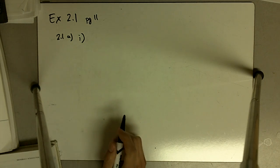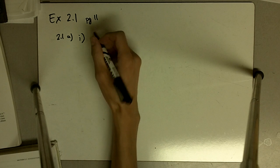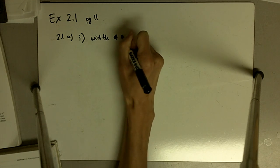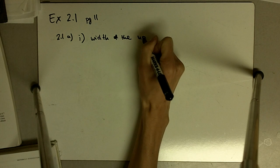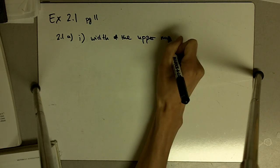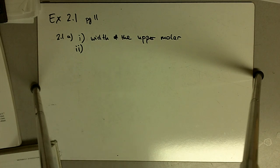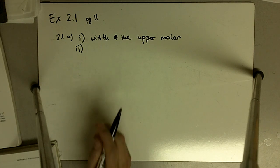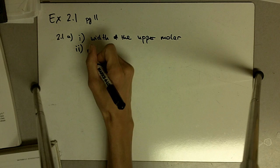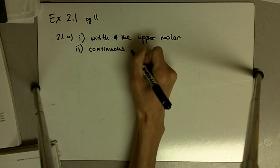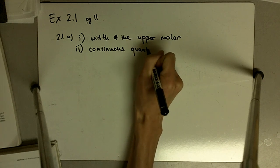So it says identify the variable. The variable in this case is the width of the upper molar. For each variable, tell the type of variable. This is going to be a continuous quantitative variable.